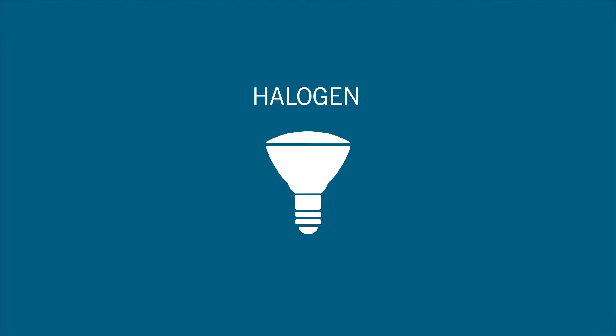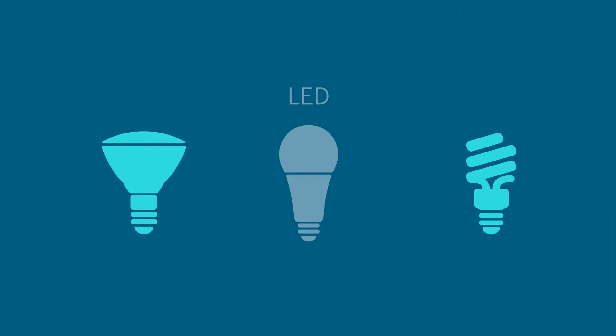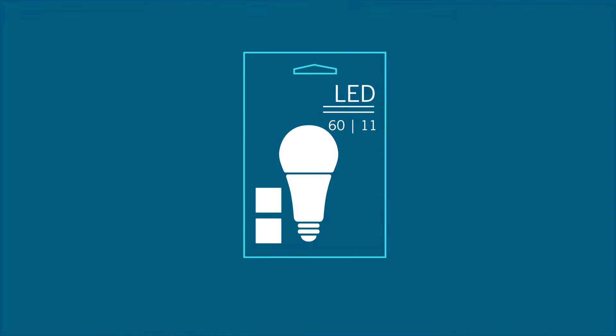The lighting aisle at your favorite store looks different than it did even a few years ago. Old-fashioned incandescent light bulbs have been replaced with halogens and energy-efficient CFLs and LEDs. Lighting packaging looks different too.